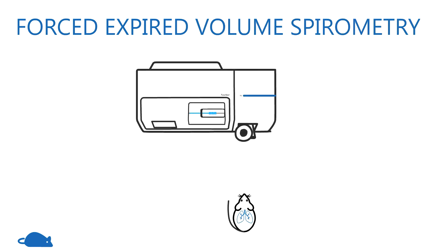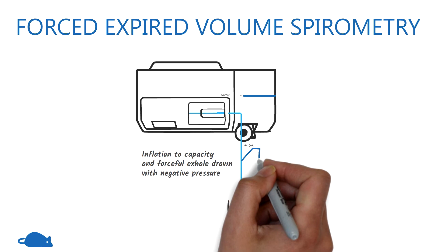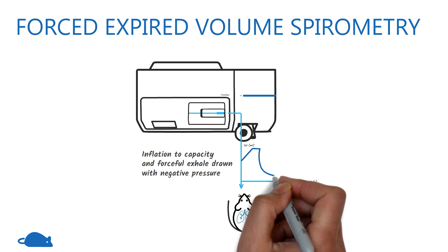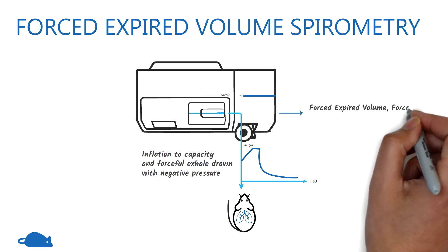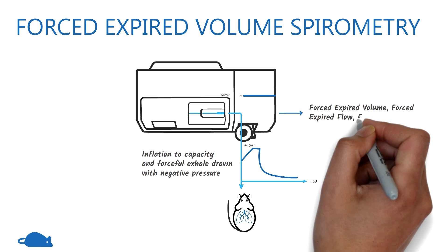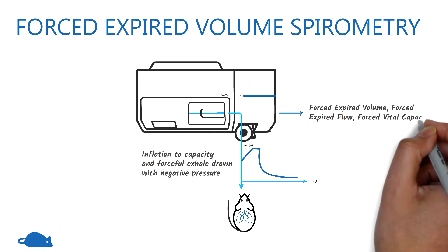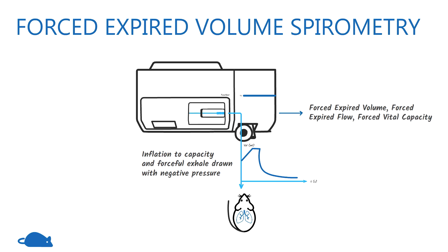In the forced-expired volume measurement, the lungs are recruited to total lung capacity and then a forced expiration is elicited with exposure to a negative pressure. This allows the flexiVent to calculate spirometry-like measures such as forced-expired volume, forced-expired flow, and forced vital capacity.